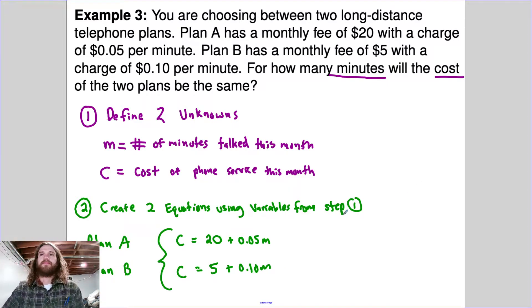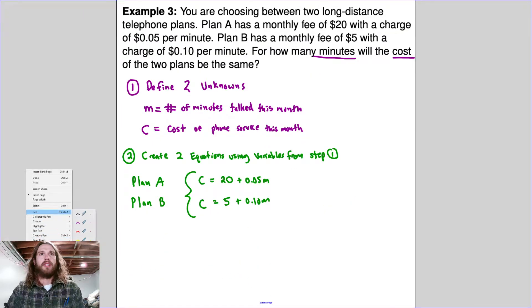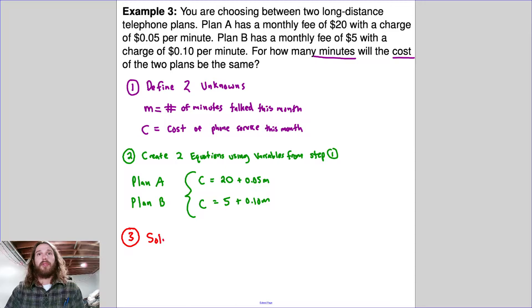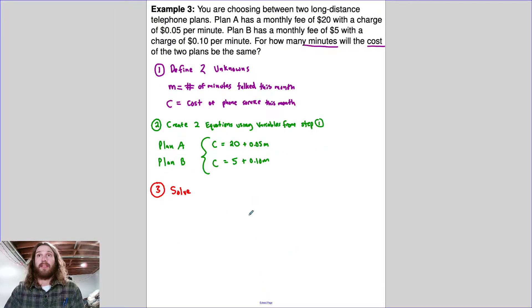Let's talk about our strategy for solving this. You can use either substitution or elimination. In fact, I will do both and you should do the one that makes the most sense to you. When it says for how many minutes will the cost of the two plans be the same, it's really asking us to set these two things equal. The costs are the same. So the cost of plan A is equal to the cost of plan B. So we're really just setting these two equal to each other, which would be substitution.